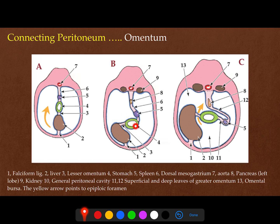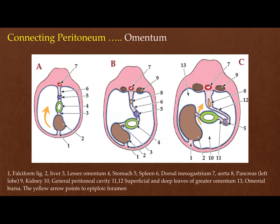The stomach will start to rotate and the dorsal mesentery will elongate. The dorsal mesogastrium will become two layers: an outer or superficial layer of the greater omentum and a deep layer of the greater omentum, with a sac in between. Let us see this in more detail.